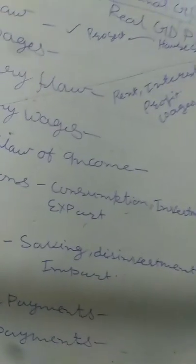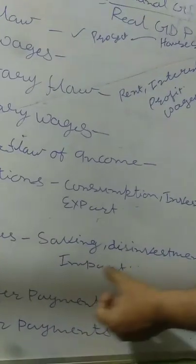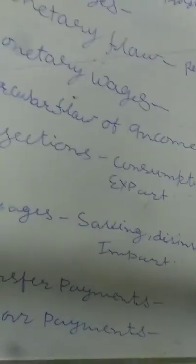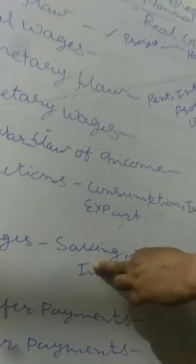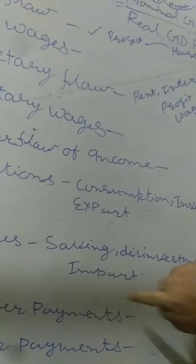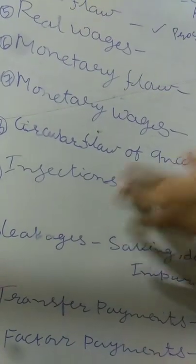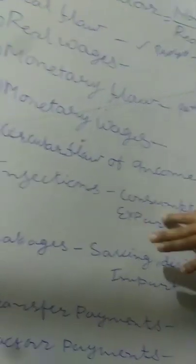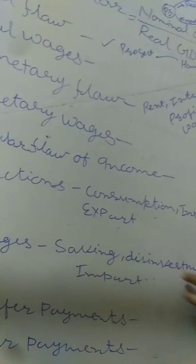Leakages: Leakages refers to those economic variables which are used to lower down or decrease the level of national income. Examples of leakages are saving, disinvestment, and imports. So injection includes consumption, investment, and export, while leakages include saving, disinvestment, and imports.